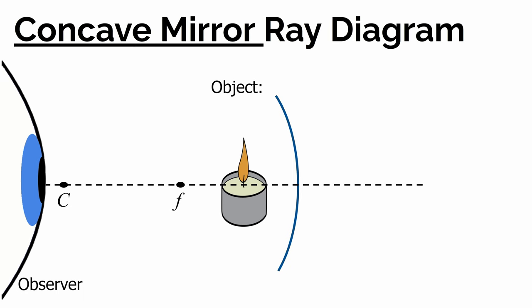Let's put the tea light candle closer to the concave mirror — specifically closer than the focal length — and use ray diagrams to predict what the image looks like. We know from the video it'll be bigger and upright. Rule one: draw a ray parallel to the principal axis; it bounces off through the focal point. Rule two: draw a ray from the focal point direction — since it can't go through the focal point, we draw it going from that direction and hitting the mirror, and it must bounce off parallel to the principal axis. These two reflected rays are now diverging — spreading apart, not coming together.